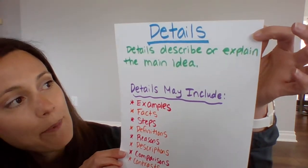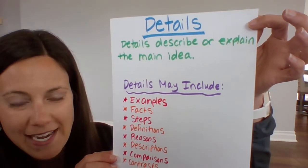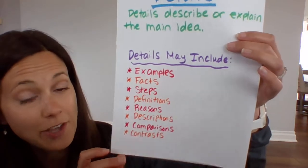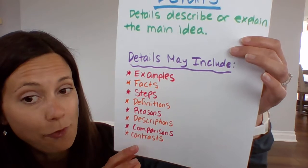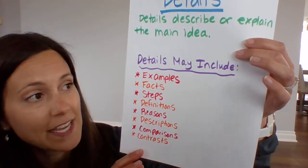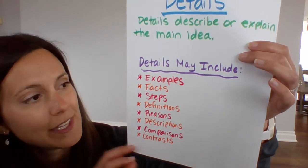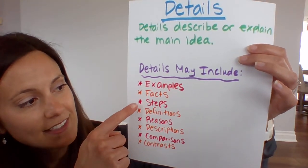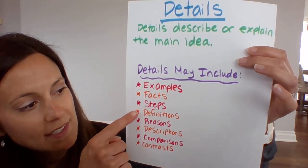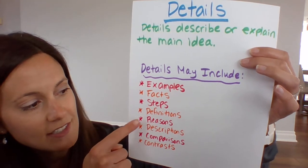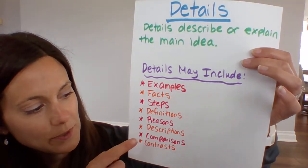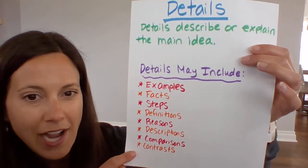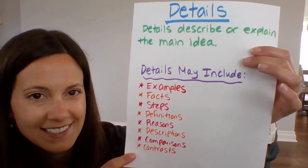Details describe or explain the main idea, and here are some examples of what details might include: examples, facts, steps, definitions, reasons, descriptions, comparisons, or contrasts.